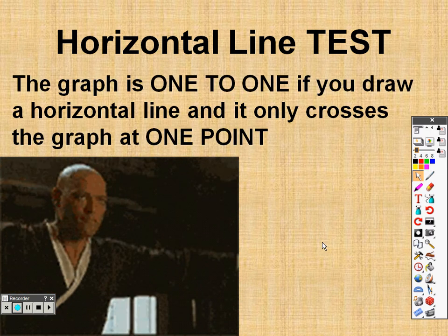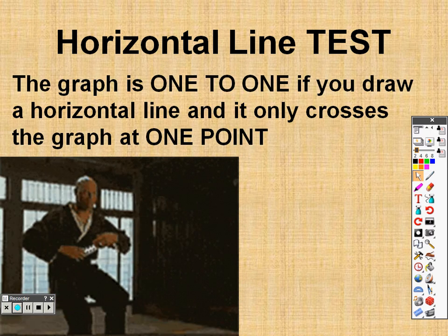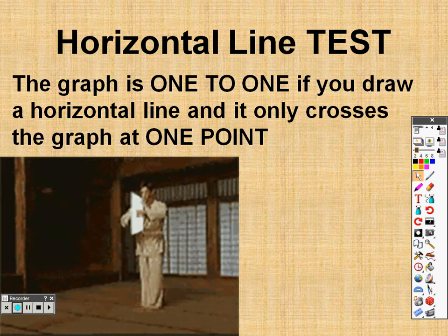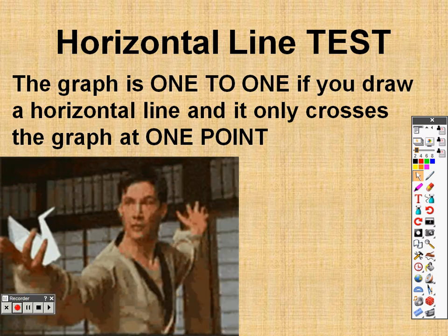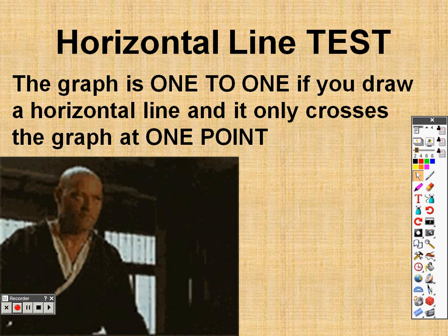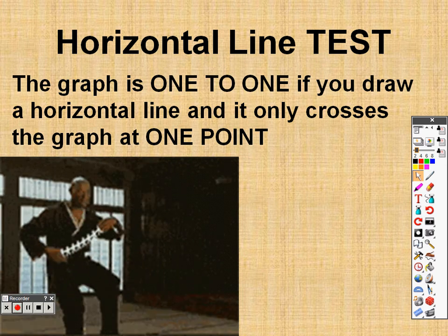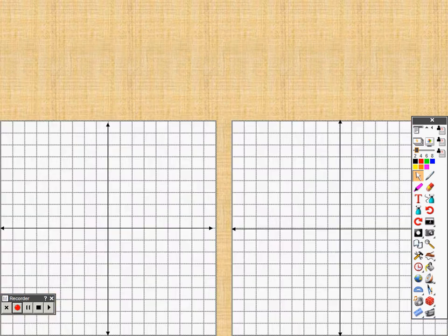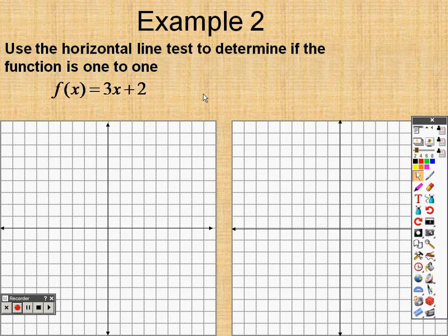So an easier way to actually do something like this is, surprisingly enough, to graph it, because if you graph it, you can graph it and see if it's one-to-one by drawing a horizontal line. And if it crosses the graph at one point, then it's one-to-one. So this is called the horizontal line test. So we're going to try to use the horizontal line test here on the first example we just did. Now, we already know the answer, but I'm going to prove to you why it is using the horizontal line test.